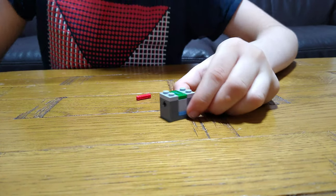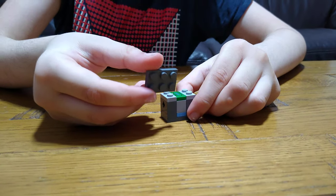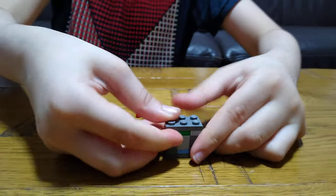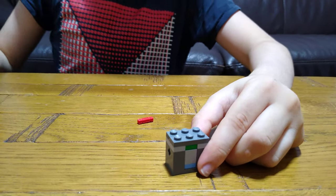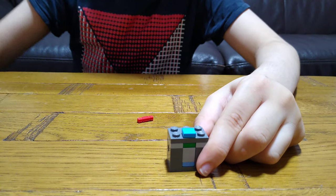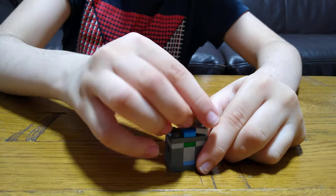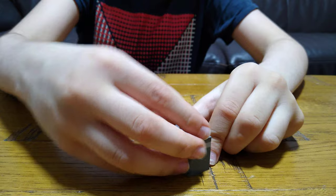And then get one of these 1x2 tiles, put it on, and then get one of these 1x1 tiles and then get one of these corner pieces, put it onto here like this.